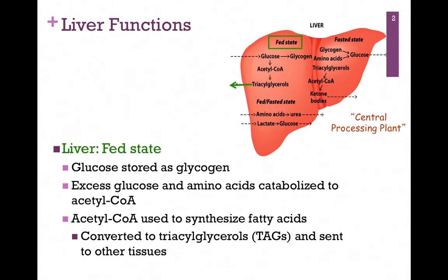With plenty of fuel coming in, the liver will store glucose as glycogen, but remember there's only so much storage space. Any excess glucose or amino acids are catabolized to acetyl-CoA. That acetyl-CoA is then used to synthesize fatty acids, and of course that's converted to triacylglycerols, which are sent to other tissues and also to adipocytes for storage.